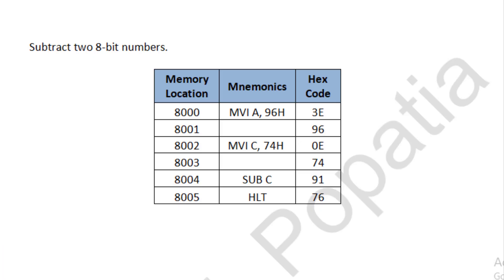Now the next program: subtract two 8-bit numbers. We store the first 8-bit number in A and the second in C, then subtract the contents. We are doing A minus C, and the result will be stored in register A. This is 96 minus 74. Let us see how we do this in the simulator and what answer we get.